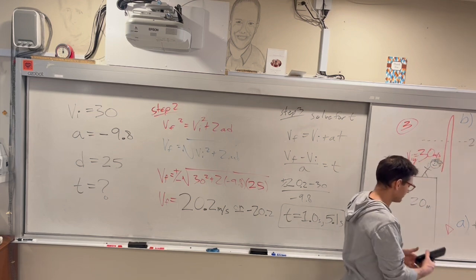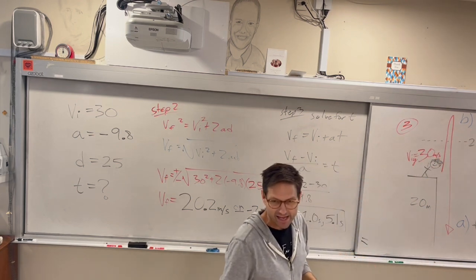Just minus 20.2 meters per second down. And so if you calculate those two different times, that's the time it takes to be going through on the way up, and that's the time it takes to be coming back down. I forgot to do B, so let's do B. At the max height, what's the velocity? Zero.